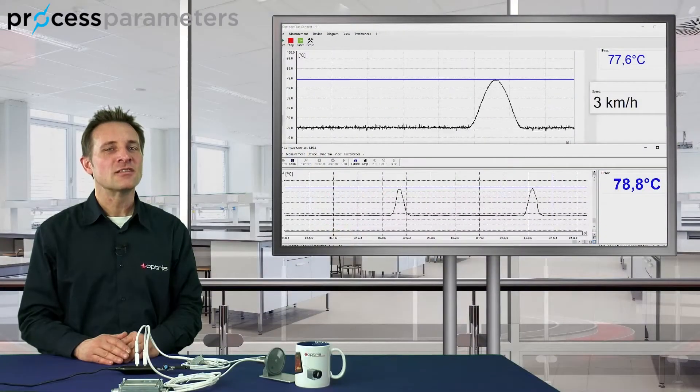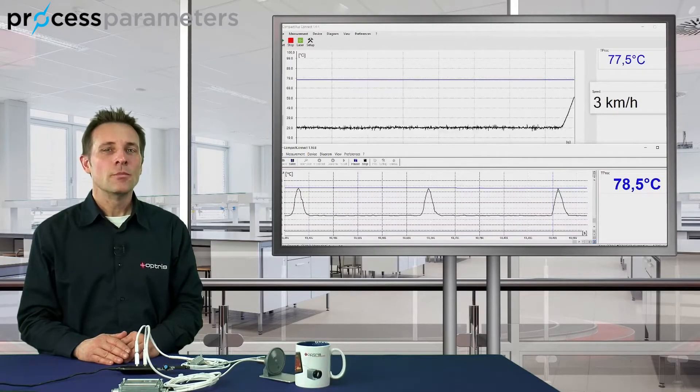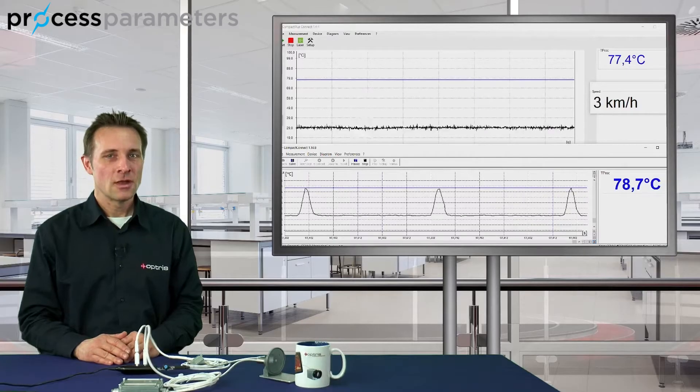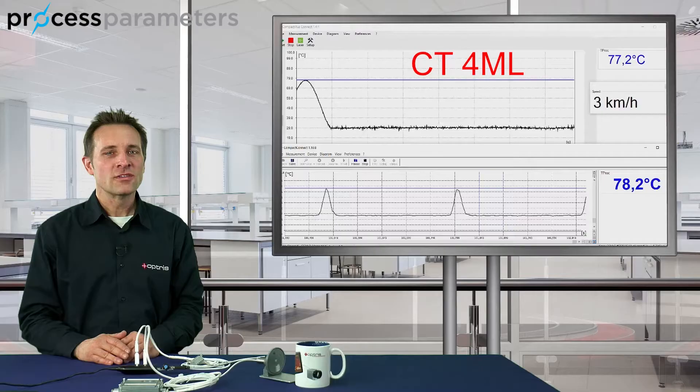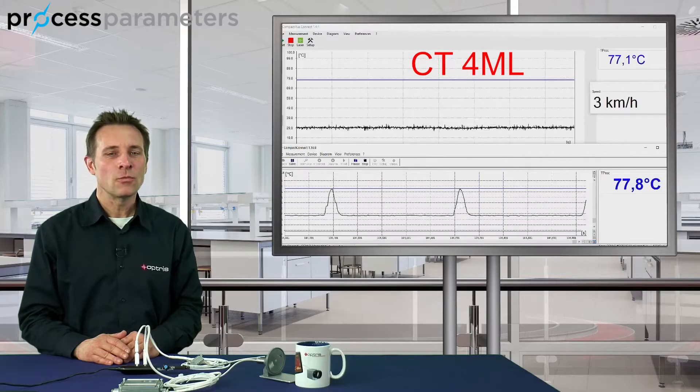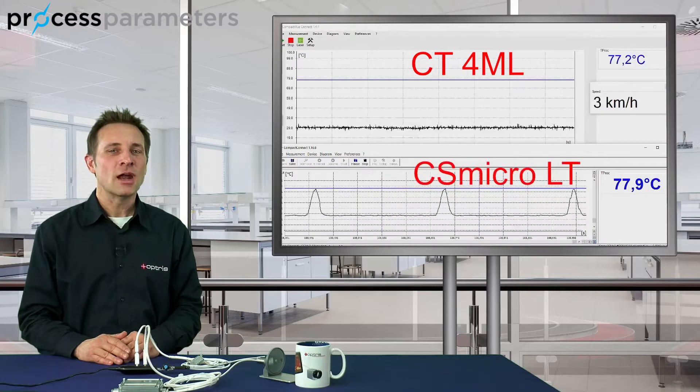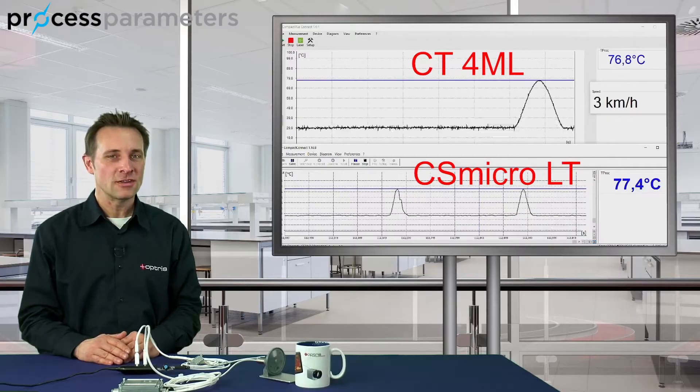If the speed is as low as 3 kilometers per hour, both sensors can recognize the right target temperature. The top diagram shows the CT4ML sensor with a temperature of 77.1 degrees Celsius. The bottom diagram shows the CSMicro LT sensor with a temperature of 77.5 degrees Celsius.